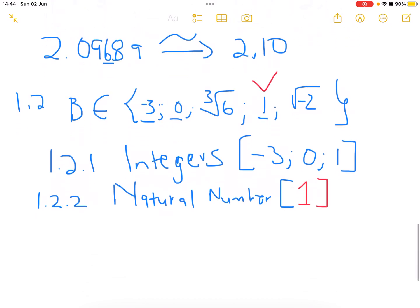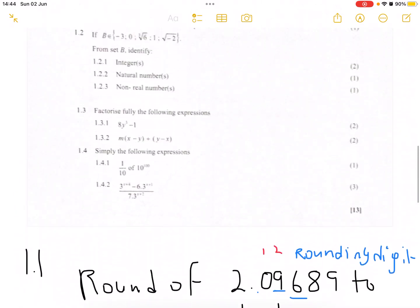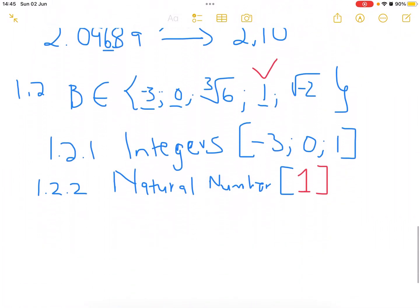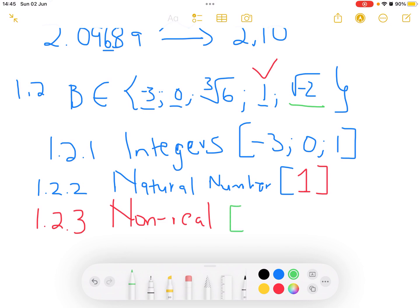Next up, they're saying we must identify the non-real number. If a number is non-real, it's most probably the square root of a negative integer. The only one here that is a square root of a negative integer is this one. Therefore, it's the square root of negative 2.